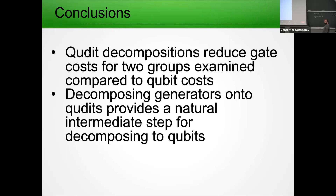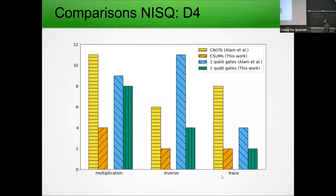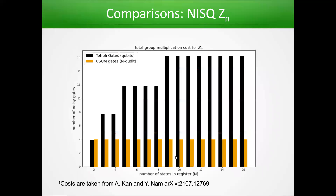Question: In those plots where you had qudits and qubits, what was the d for the qudits? Answer: For qubits, they're scaled to the register size — so if I'm doing Z16, I have d=16. This isn't too surprising, but it's still encouraging that breaking up our system like this can reduce gate costs.